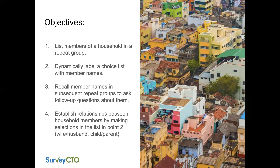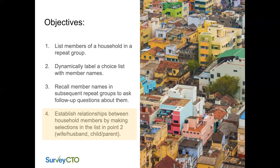Let me lay out our objectives today. We are going to establish relationships using repeat groups. We're going to look at a household survey scenario. The first thing we will do is list members of a household in a repeat group. From there, we will dynamically label a choice list with the member names from that repeat group. The third step, we will recall member names in subsequent repeat groups to ask follow-up questions about those members, and amongst those follow-up questions we will establish relationships between household members by making selections in that list.